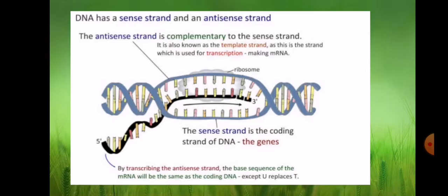DNA has a sense strand and an antisense strand. The antisense strand is complementary to the sense strand. By transcribing the antisense strand, the base sequence of the mRNA will be the same as the coding DNA, except you replace T. The sense strand is the coding strand of DNA — the genes.